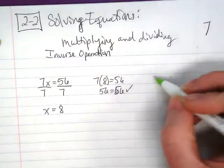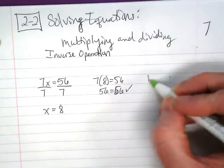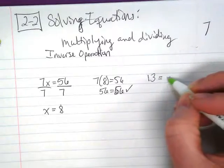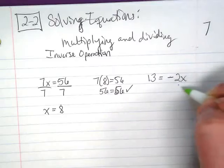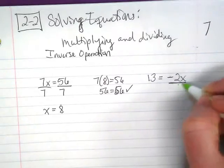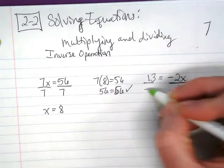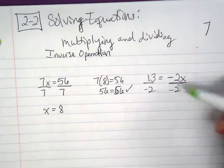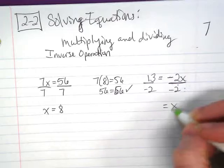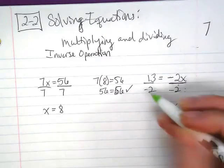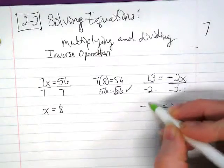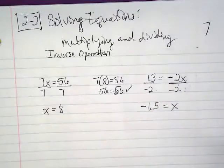These can become a little bit more complex if we're dealing with negatives and things that might end up in a decimal. I have 13 is equal to negative 2x. I'm going to now have to divide by this negative 2. Negative 2 divided by negative 2 is a positive and invisible 1. 13 divided by negative 2 is negative, and half of 13 is 6.5.